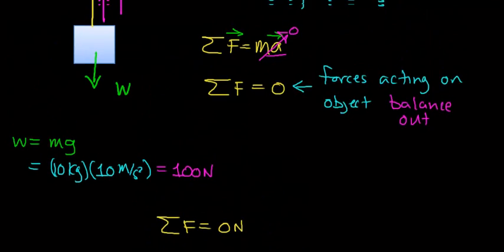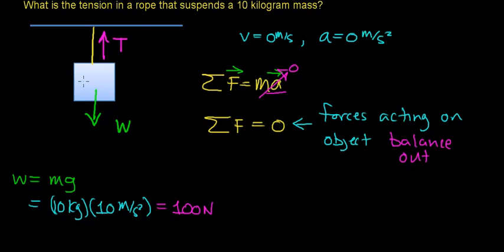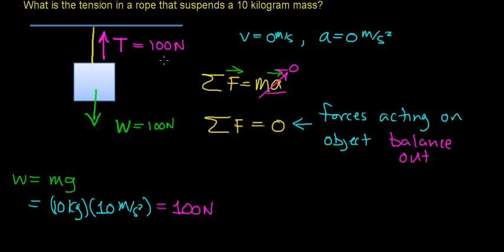Going back to our picture: if the weight of this object is 100 newtons, the rope has to pull back with a force equal to the weight. The force of gravity pulls this object downward with 100 newtons, so the rope pulls upward on this box with an equal force of 100 newtons. We're assuming this object is not being accelerated by an outside force — that is, it's not in an elevator — so we're working in an inertial frame of reference.